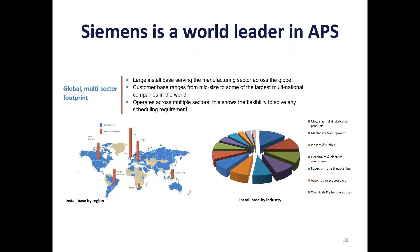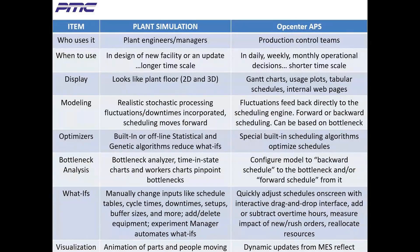Siemens, the maker of OpCenter APS, is a world leader in advanced production and scheduling systems. It has the largest install base serving the manufacturing sector across the globe, ranging from mid-size companies to some of the largest multinational companies in the world. Like PlantSim, it operates across multiple sectors, multiple markets, and multiple verticals because it has the flexibility to solve any scheduling requirement. It's interesting to note that even though both tools are predominantly used in manufacturing, they have been successfully deployed in the services industry too.